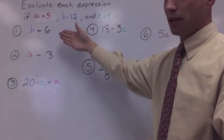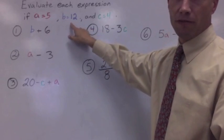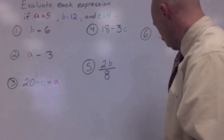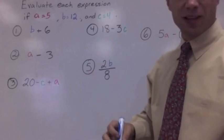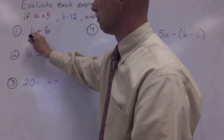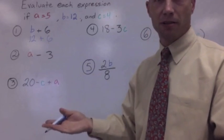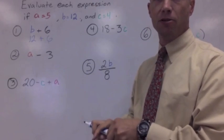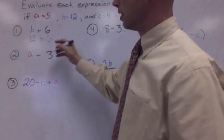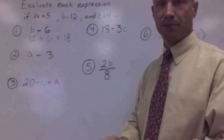Number one, B plus six. We know from our directions that B is 12. All you have to do is take 12 and put it in the place of B, like this, 12 plus six. You're rewriting the expression, but instead of using the variable, you use the number that you know the variable is. 12 plus six is 18, and that's the answer to number one.